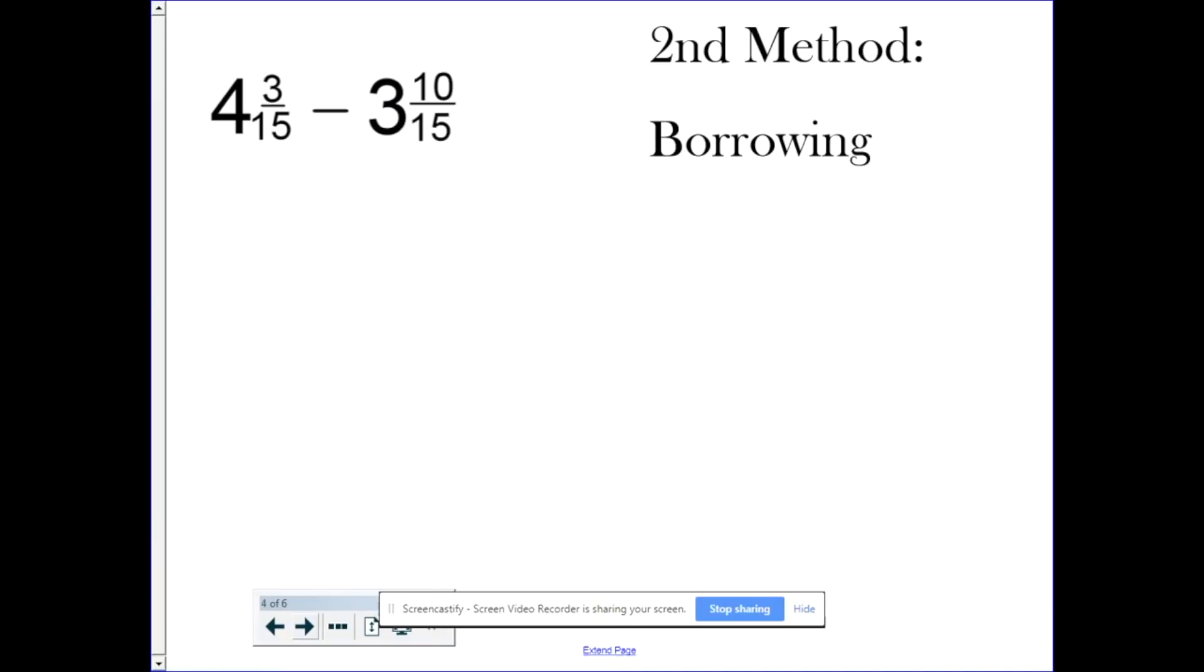Second method is borrowing. In borrowing with whole numbers, you take 1 away from the bigger place value and add 10 to the smaller one. With mixed numbers, it's a little different. First and foremost, line up the fractions like you normally would to make it easier to subtract. Now, we have 3 15ths minus 10 15ths. We can't do that, but we know it's going to work because 4 is bigger than 3. So we take 1 away from the 4. That becomes a 3. And then here's where the change happens. Normally, you'd add 10 to the smaller part. But here, you add the denominator to the numerator.